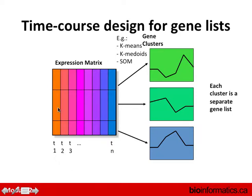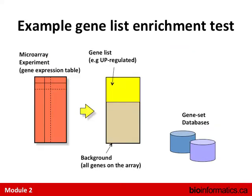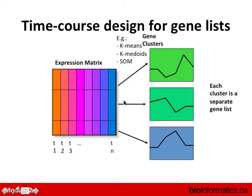Here's another example of an experimental design for generating gene lists: a time course. You have different expression profiles measured at different times, you cluster them, and you find that certain genes follow certain patterns — each cluster defines a list. This is another way of creating a list without creating an arbitrary threshold. You found genes that are similar to each other, and that creates a list.